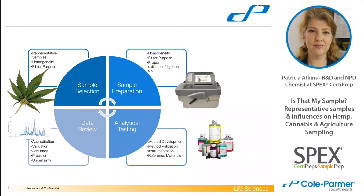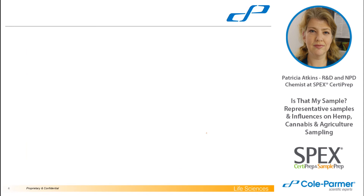When we're talking about sample preparation, it's part of a huge series of steps and methods you have to go through in order to get a data result. We're going to talk today about sample selection, which is key to your sample preparation — it's the first step. You want to make sure your samples are homogeneous, fit for purpose, and representative, because if they're not, that's going to affect your homogeneity for sample preparation, testing, and data.